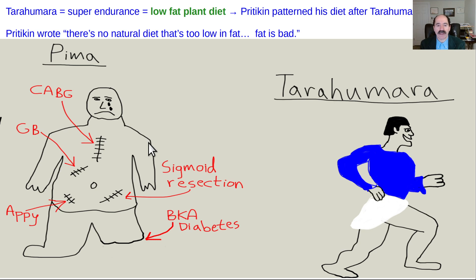This is comparing the Pima — what happens to them with the standard American diet — versus the Tarahumara, who are running ultra marathons.